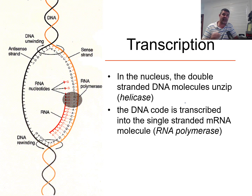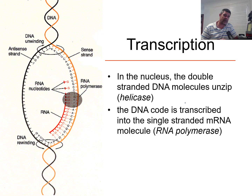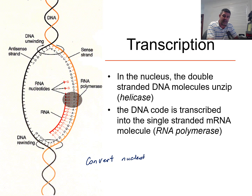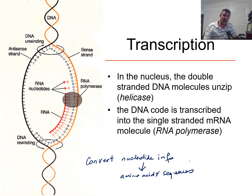We've got information in the nucleus in the form of nucleotide bases, and we want that information to be expressed as sequences of amino acids. Those are two different types of chemical structures, two different types of molecules. So what we need to do is go through two stages — we need to convert the information carried in nucleotides into amino acid sequences. That's what we're trying to do.